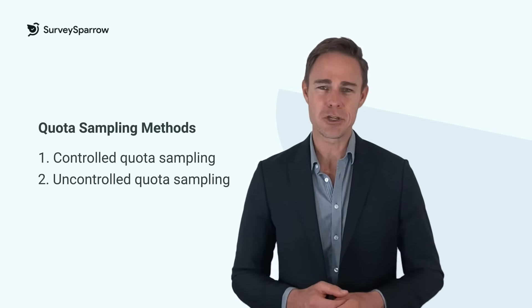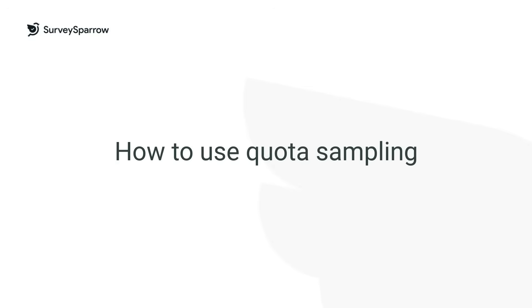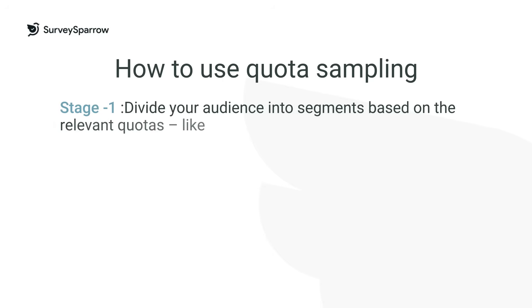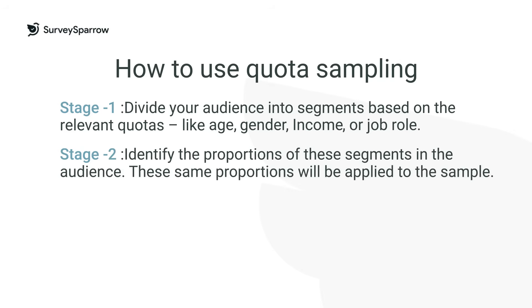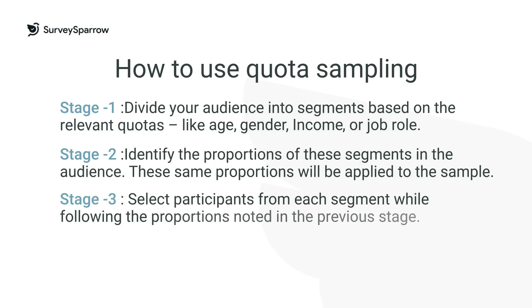How to use quota sampling. Stage one: divide your audience into segments based on the relevant quotas like age, gender, income, or job role. Stage two: identify the proportions of these segments in the audience — these same proportions will be applied to the sample. Stage three: select participants from each segment while following the proportions noted in the previous stage.